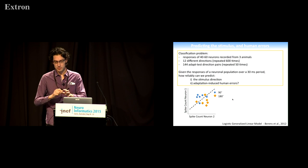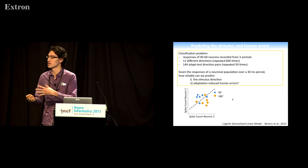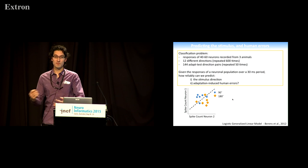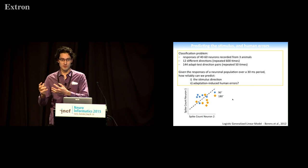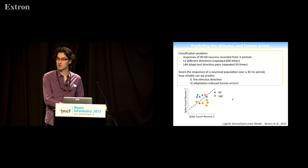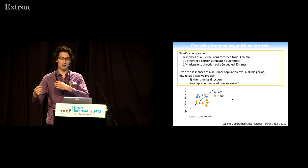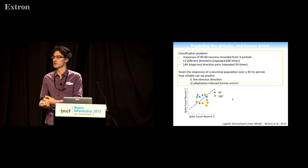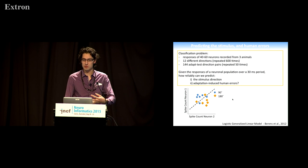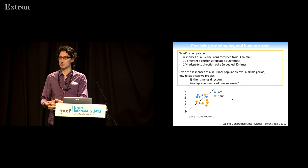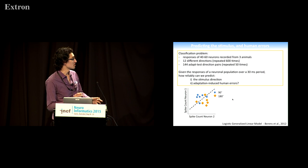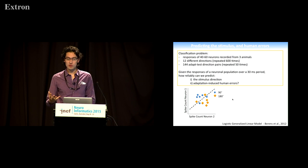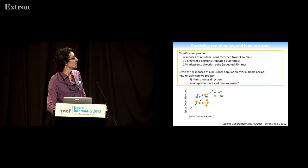We see this in the neurons. What we wanted to know was: is this the same sort of thing that's happening in human perception? The approach that we've taken here is essentially to treat it as a classification problem. Given the responses of 46 to 60 neurons from a single animal—we have these responses to 12 different directions—how reliably can we predict what the stimulus direction was? And if we take the test and adaptation pairs, how well can we predict adaptation-induced human errors? This is a very common problem that people have solved using things like support vector machines, Fisher's linear discriminant analysis. We're using a logistic generalized linear model, partly because of some similarities in brain function that we like.